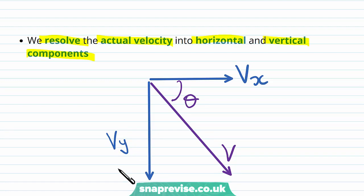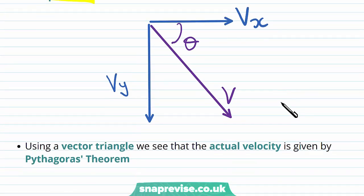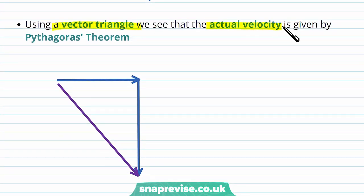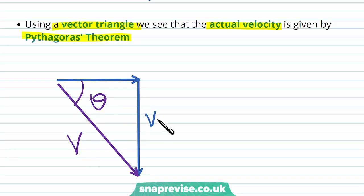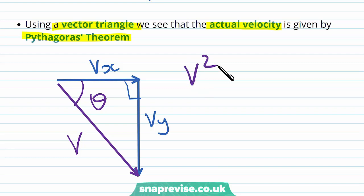We've seen how to resolve vectors previously. Using a vector triangle, we see that the actual velocity is given by Pythagoras' theorem. We've got our actual velocity v at an angle theta, with vertical component vy and horizontal component vx. We've got a right-angled triangle because the vertical and horizontal components act at right angles to each other. So v squared equals vx squared plus vy squared, and therefore v equals the square root of vx squared plus vy squared.